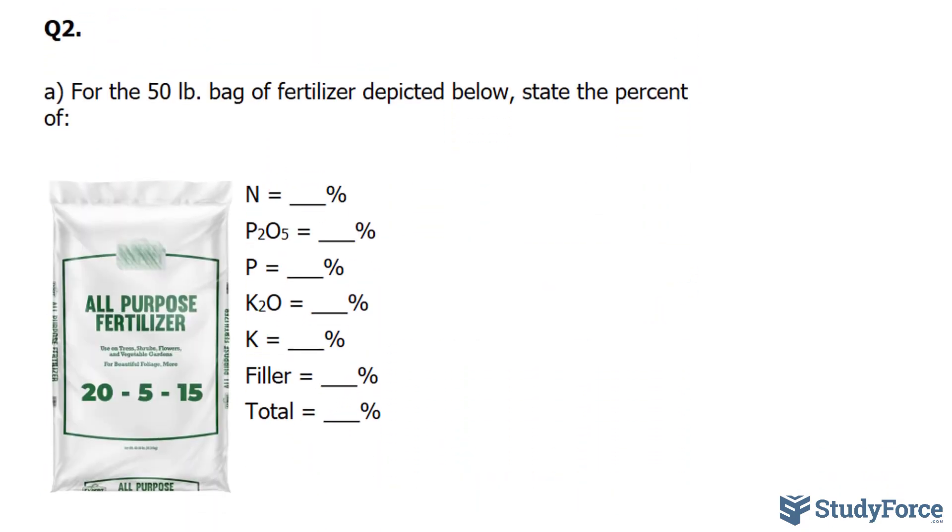Question 2 reads, for the 50 pound bag of fertilizer depicted below, state the percentage of all these things. They want the percentage of nitrogen, P2O5, and so on.